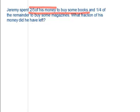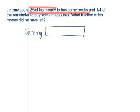Let's start with a model diagram. Jeremy had some money, so this whole bar represents Jeremy's money. He used 2/5 of his money to buy some books, so we divide the bar into 5 parts. 2 out of those 5 parts are used for buying books.